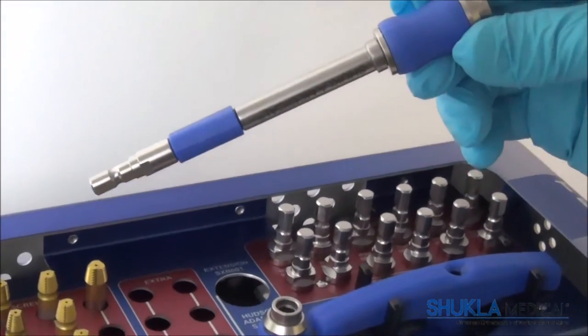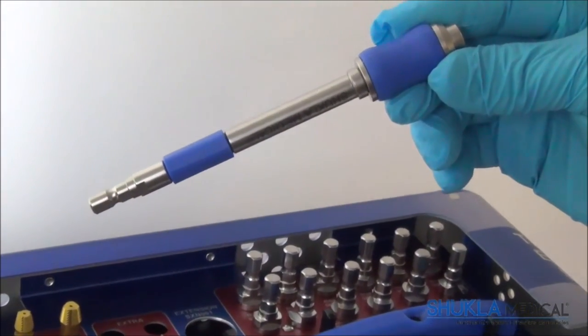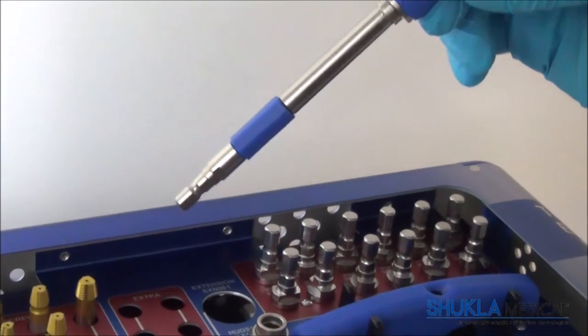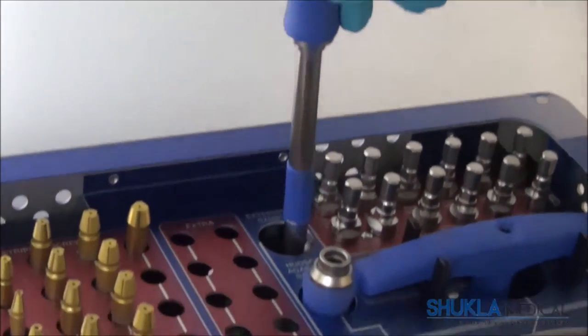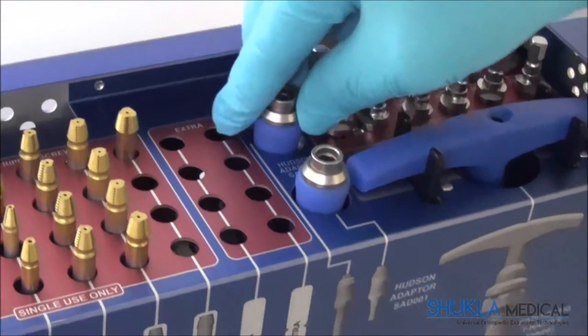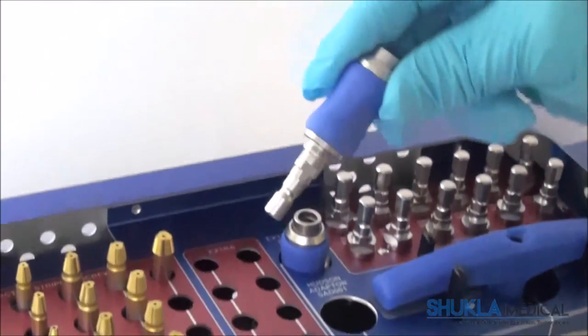To the right of the stripped screw extractor rows sits an extension which can be used with either the broken or the stripped screw extractors, and is ideal in cases where the screw is deeply embedded in the patient.